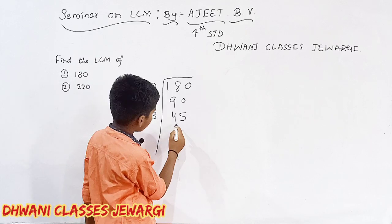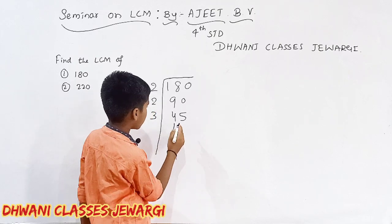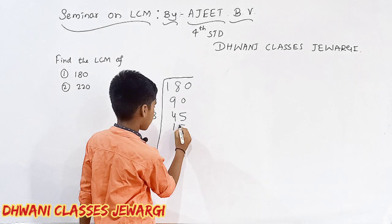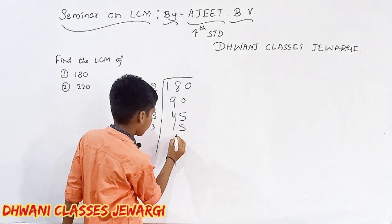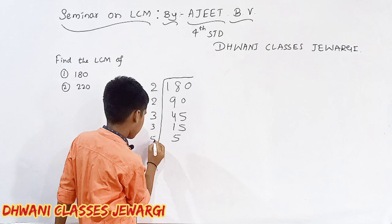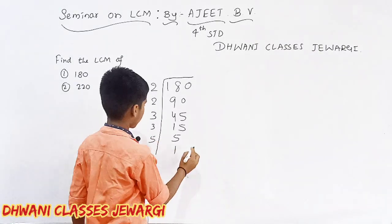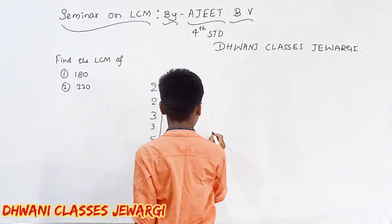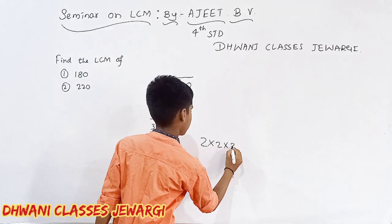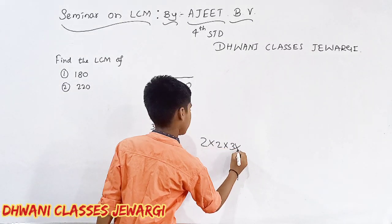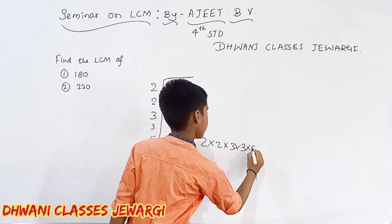3. 3 ones are 3. 3 fives are 15. 5 ones are 5.